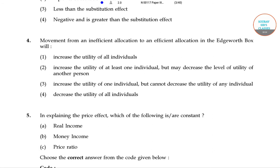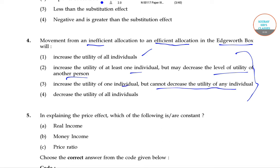In question number 4, it is given: movement from an inefficient allocation to an efficient allocation in the Edgeworth Box. Four options are given: (1) increase the utility of all individuals; (2) increase the utility of at least one individual but may decrease the level of utility of another person; (3) increase the utility of one individual but cannot decrease the utility of any individual; and (4) decrease the utility of all individuals.